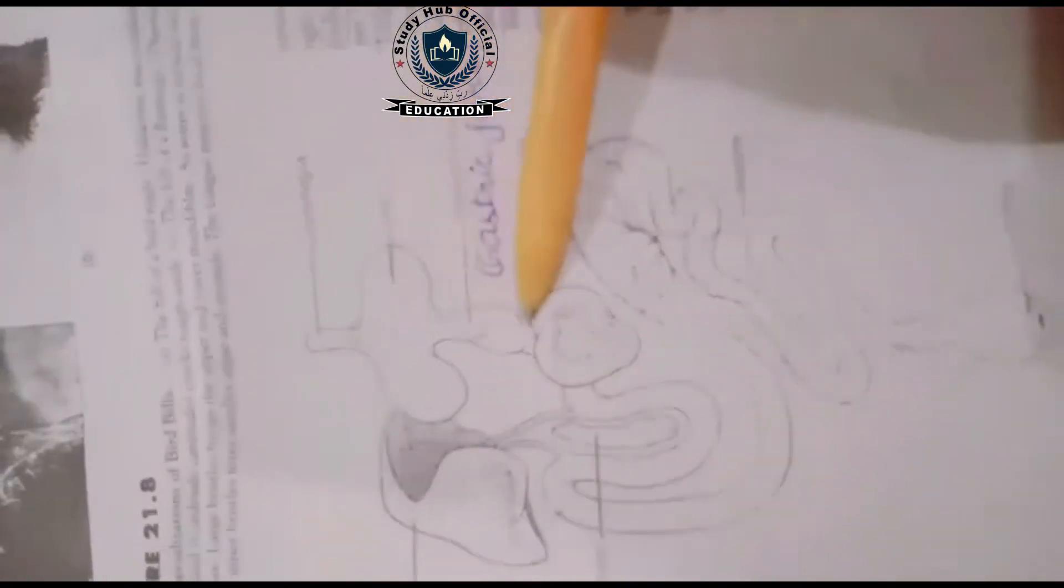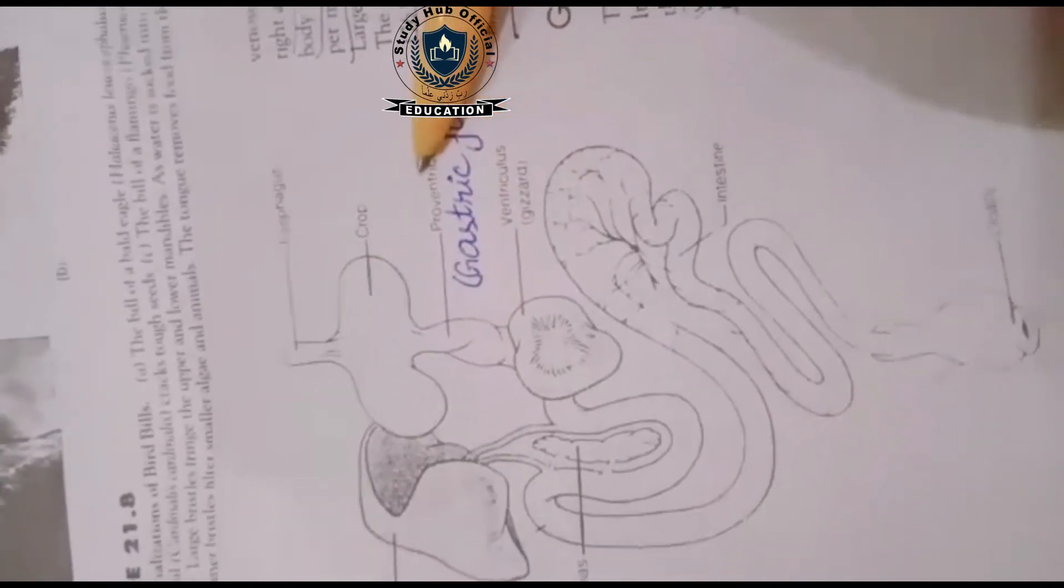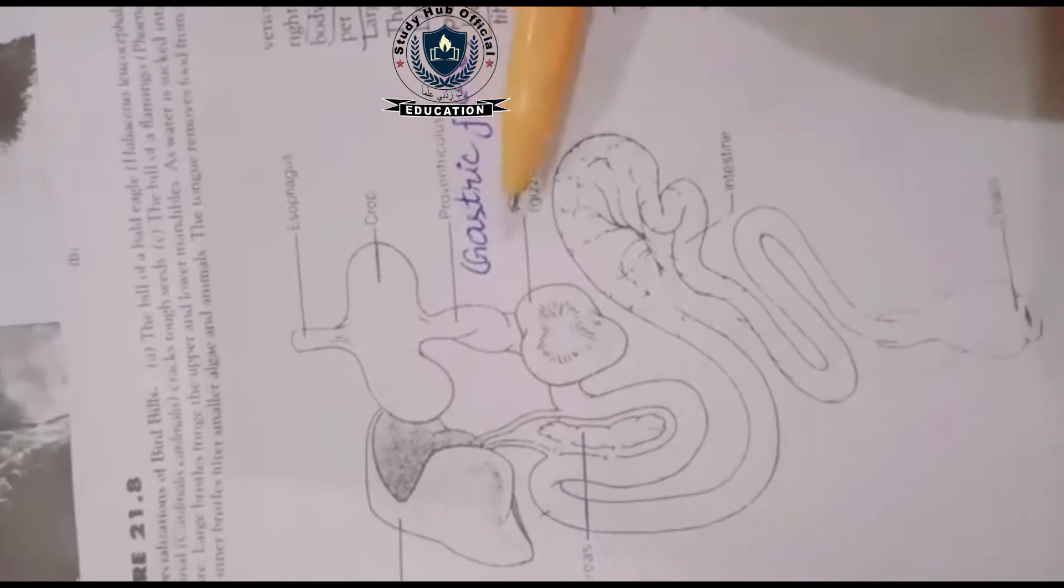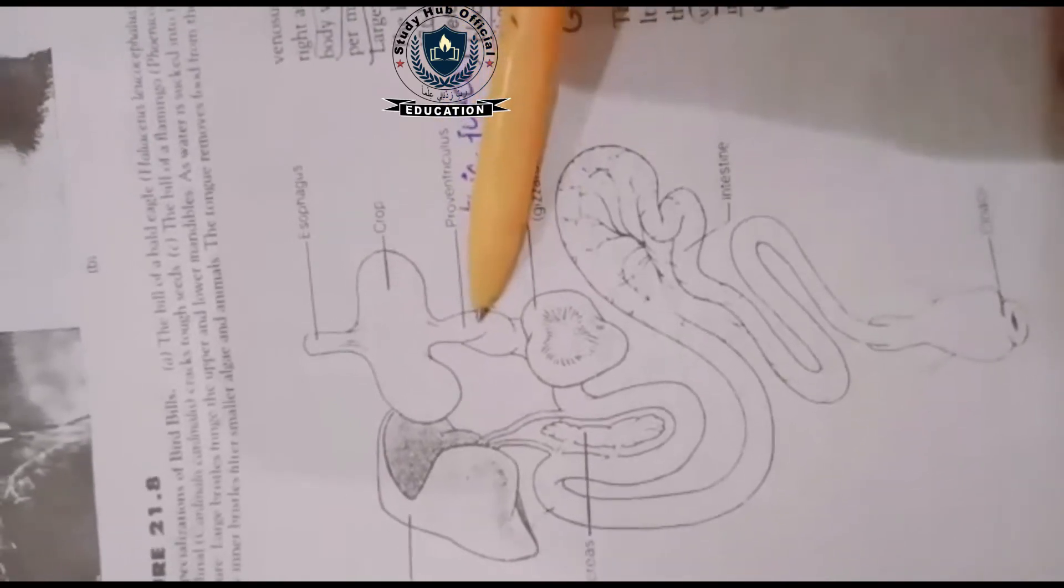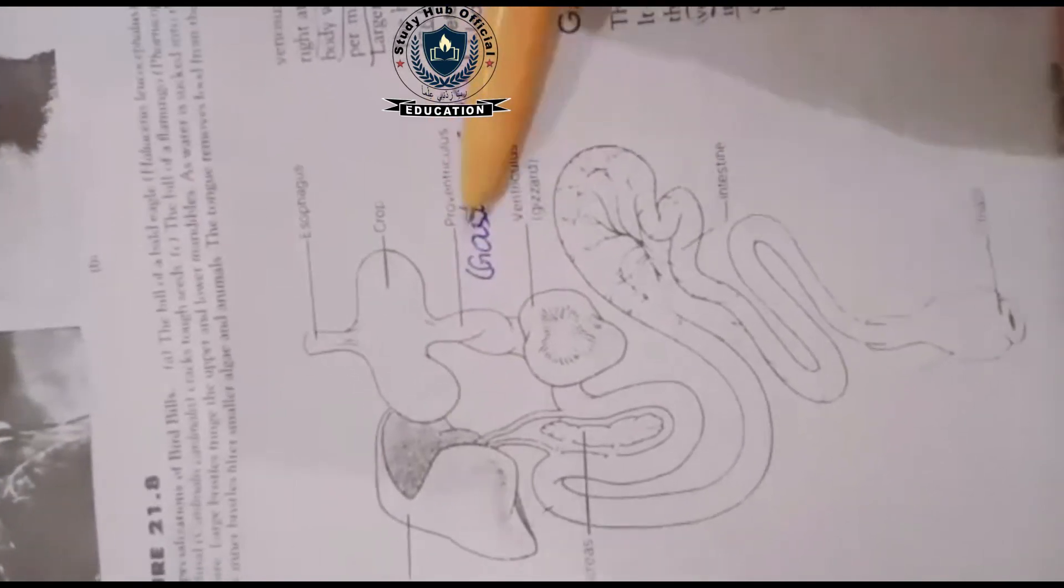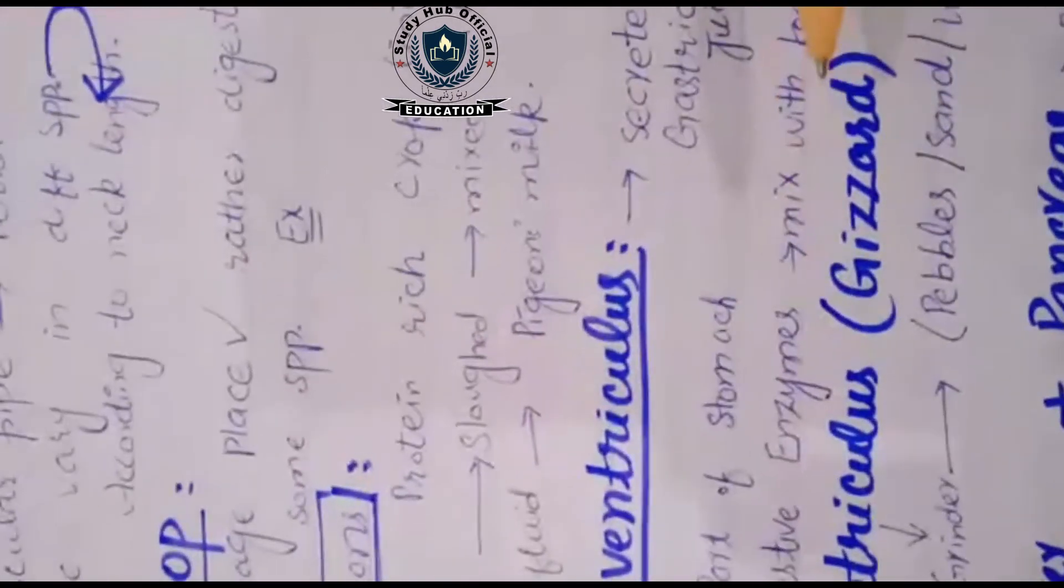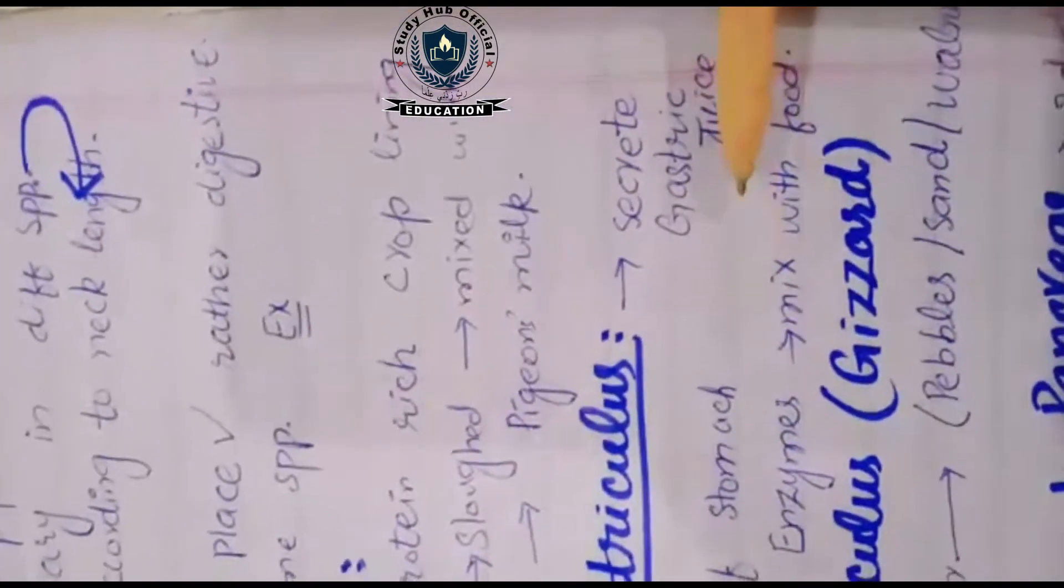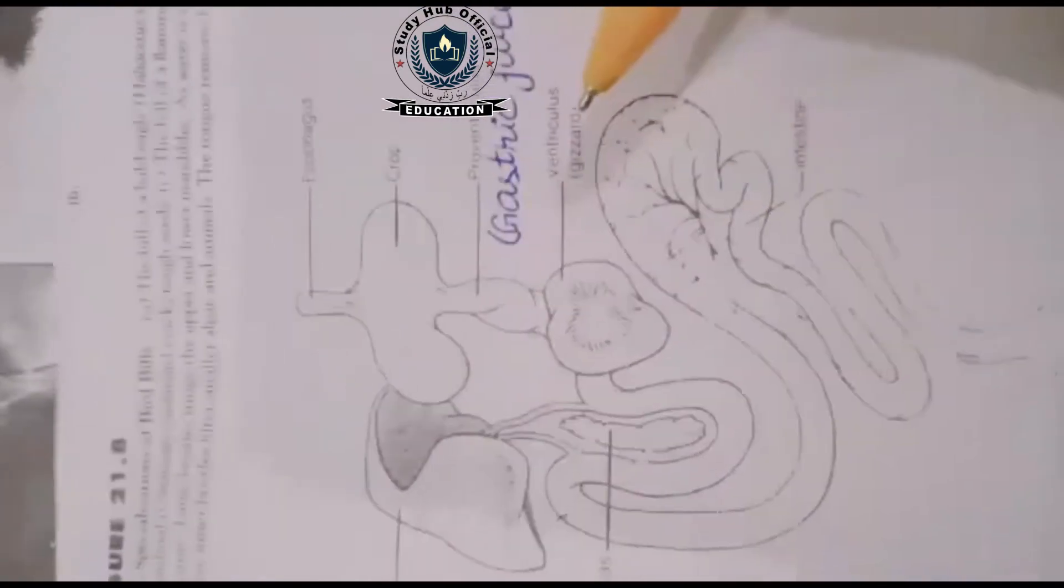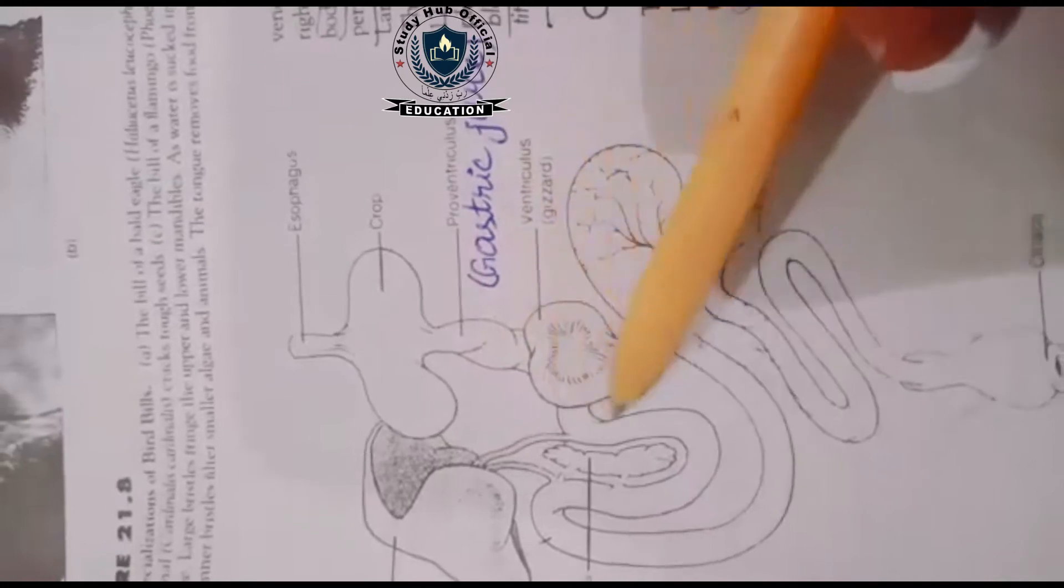Next we have a structure called proventriculus. This is the first part of the stomach. The basic function is secreting gastric juice. This gastric juice contains different digestive enzymes where food digestion starts.